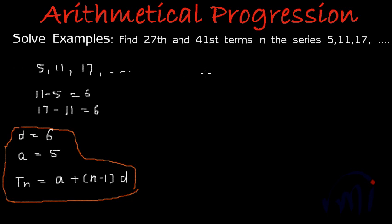So what will be the 27th term? The 27th term will be T_27, where n equals 27. So a here we have 5 plus n is 27 minus 1 and d is 6. This will equal 5 plus, if I solve this bracket, 26 multiplied by 6. If I follow BODMAS, first we have to perform this multiplication.